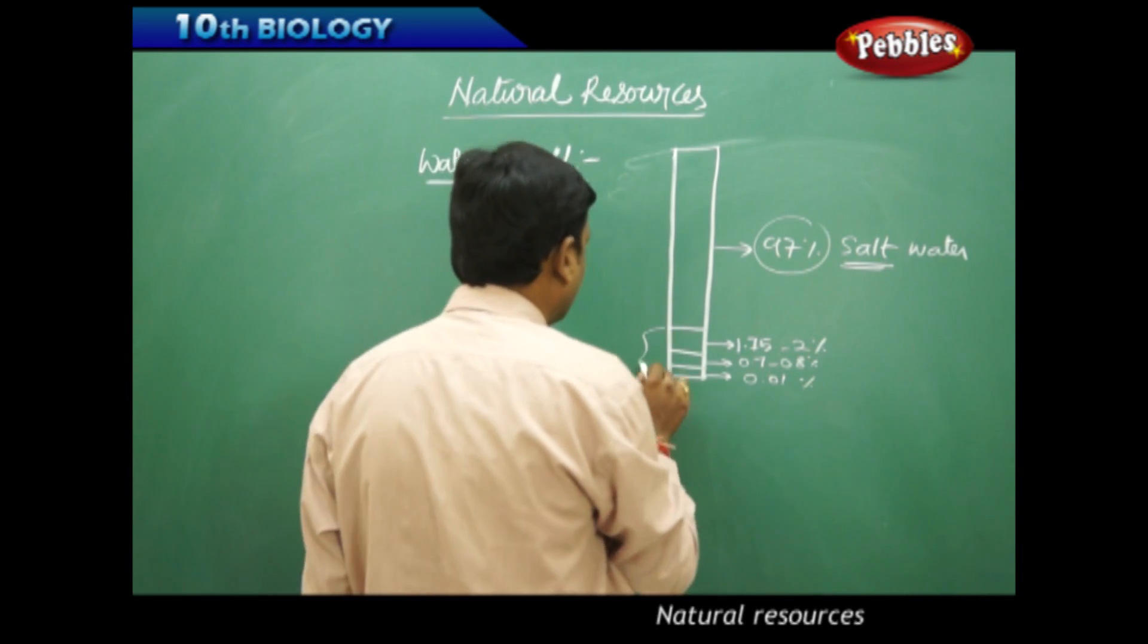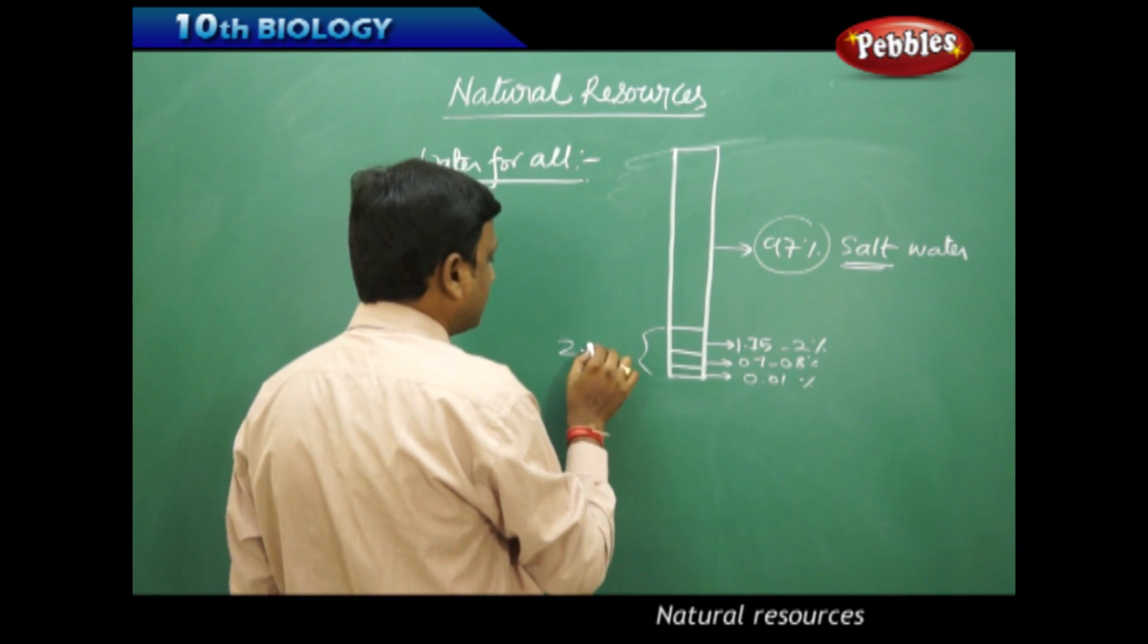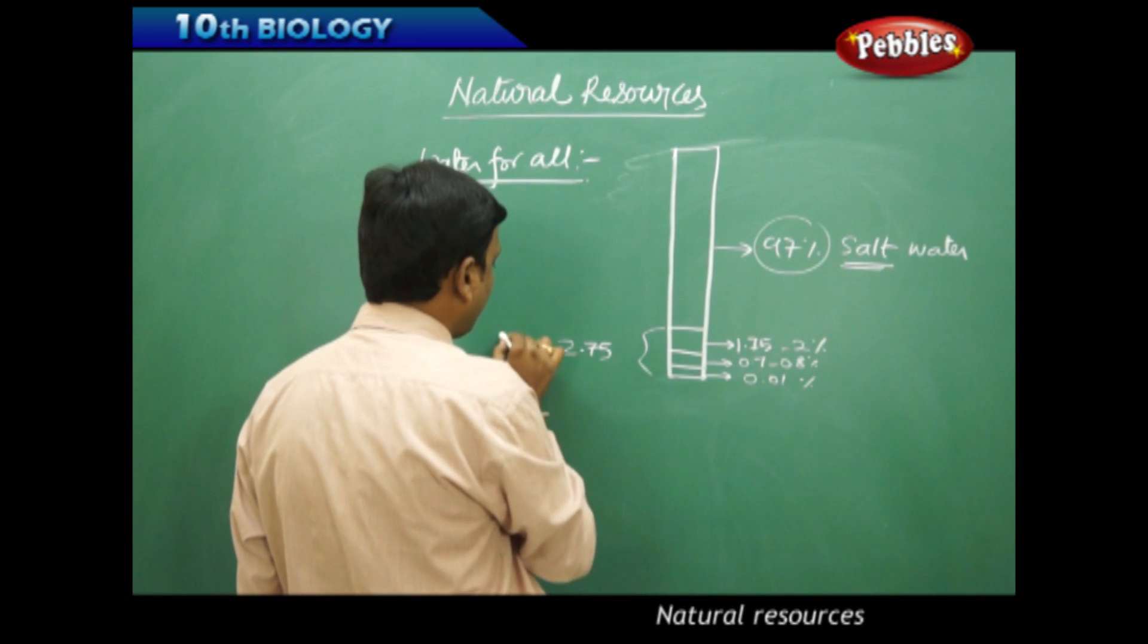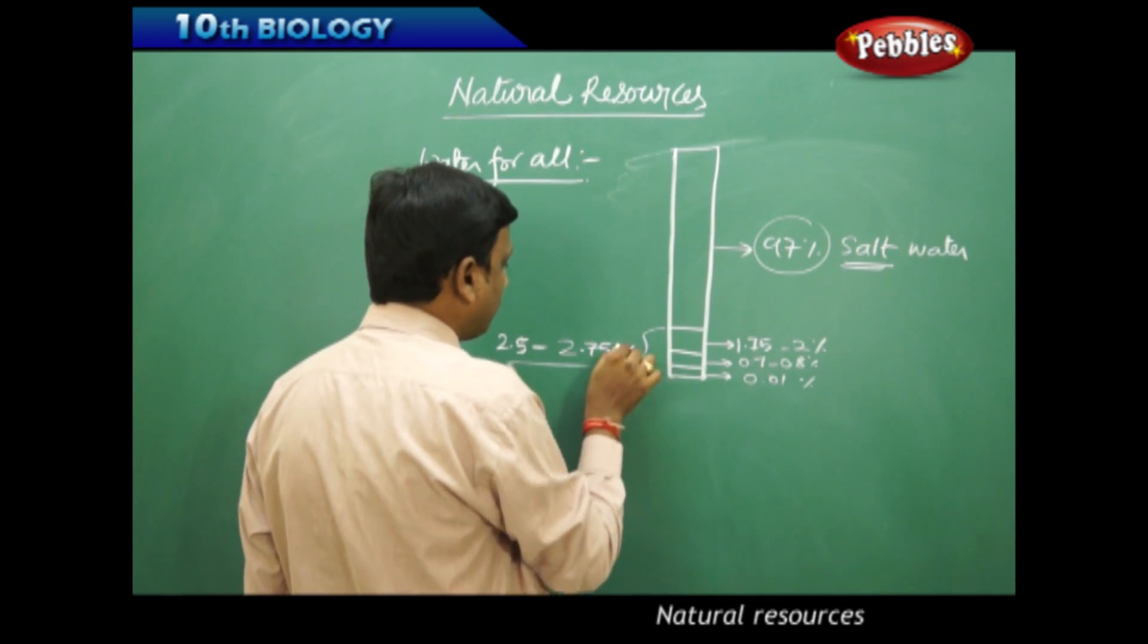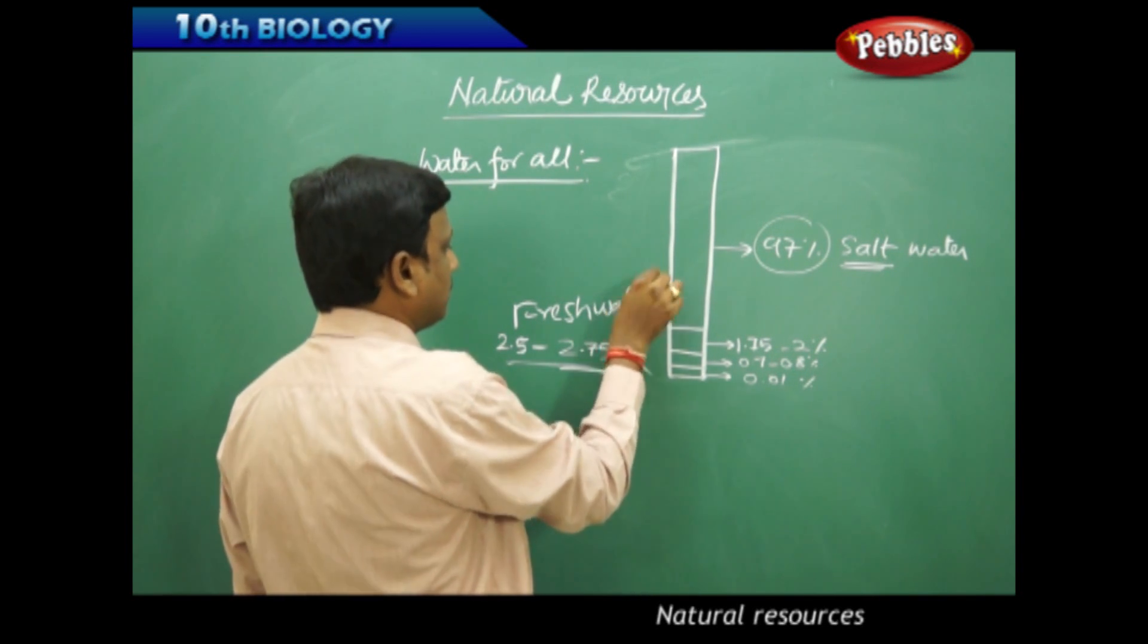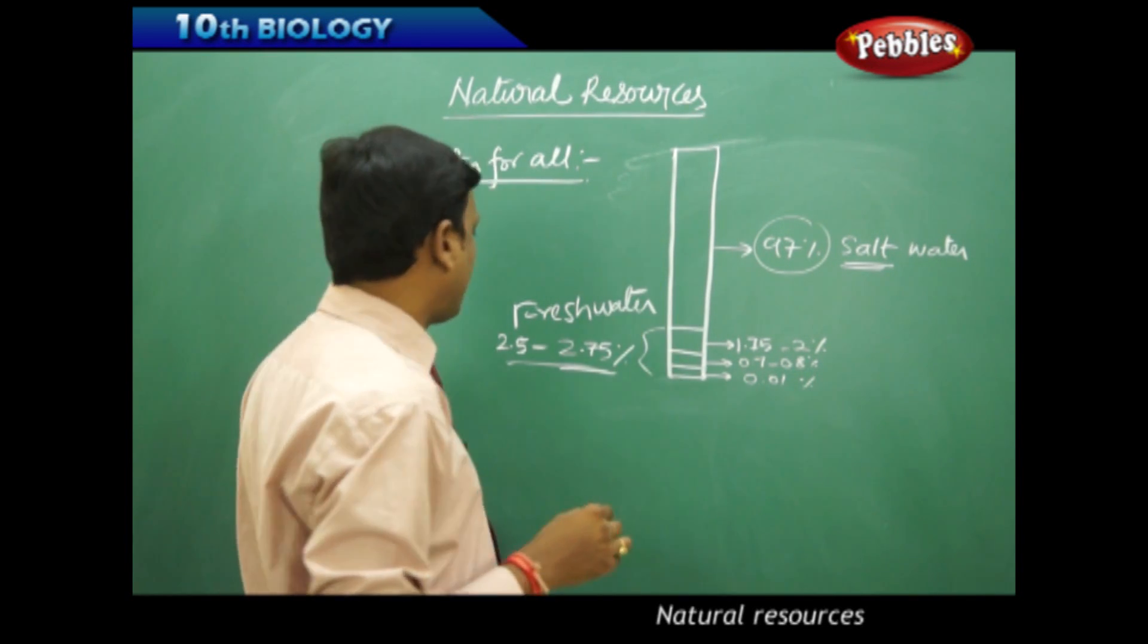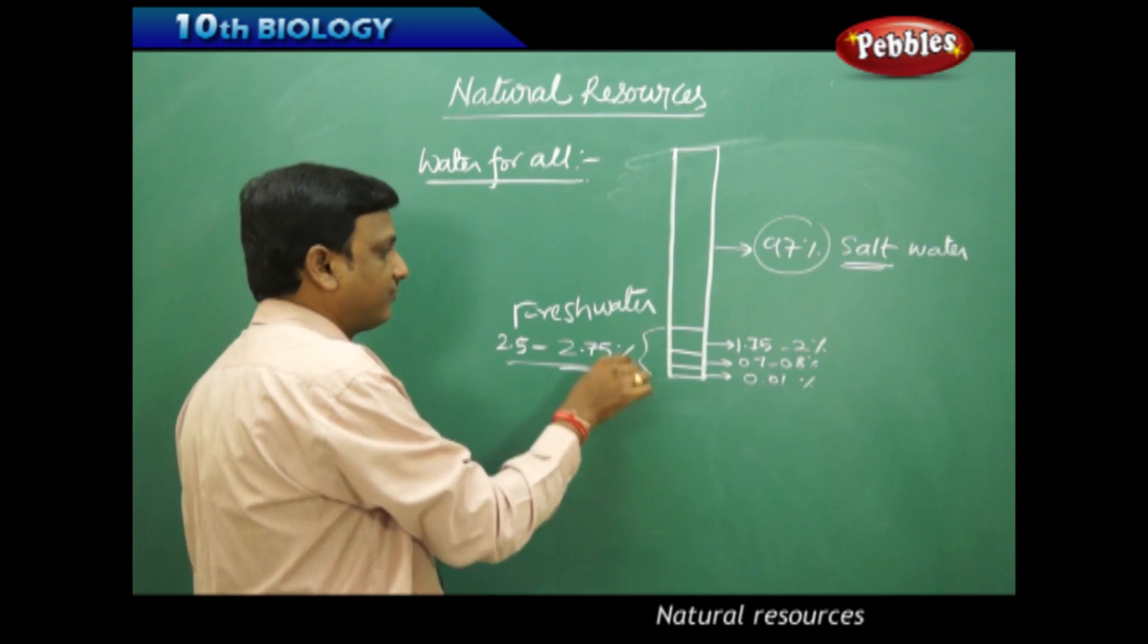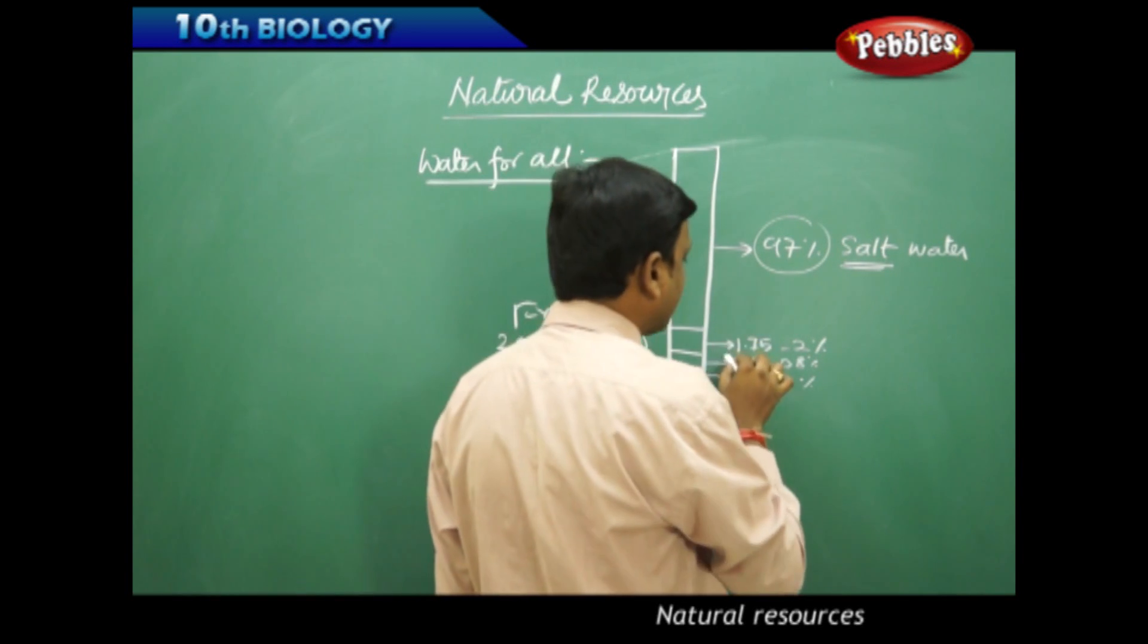Whereas if you look at the freshwater, you have 2.5 to 2.75% of freshwater. About this 2.5 to 2.75% of the freshwater, you have various categories here.